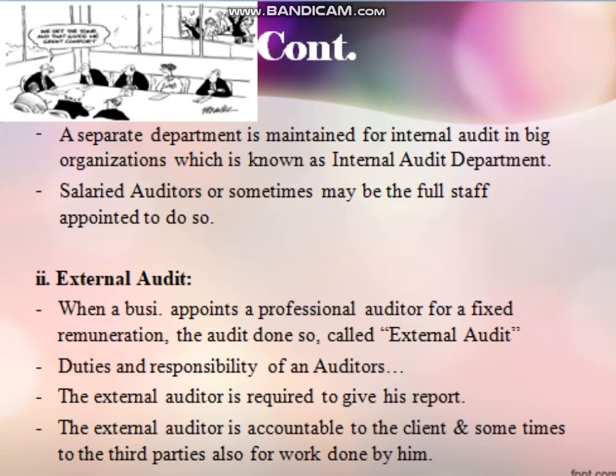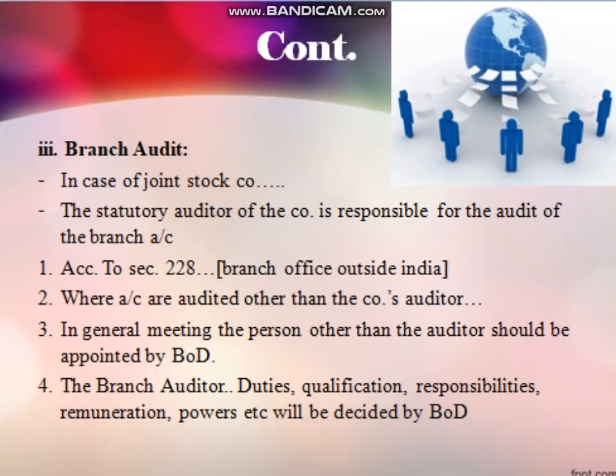So internal auditing means if an employee is appointed by the company to look after their auditing work. If an external employee is appointed for a specific period of time for a fixed remuneration to look after the books of accounts, we call it external audit. The third type is branch audit — in case of a joint stock company, branch auditing will also be done. If a company has several branches in different states or places, auditing done in all those branches is called branch audit.